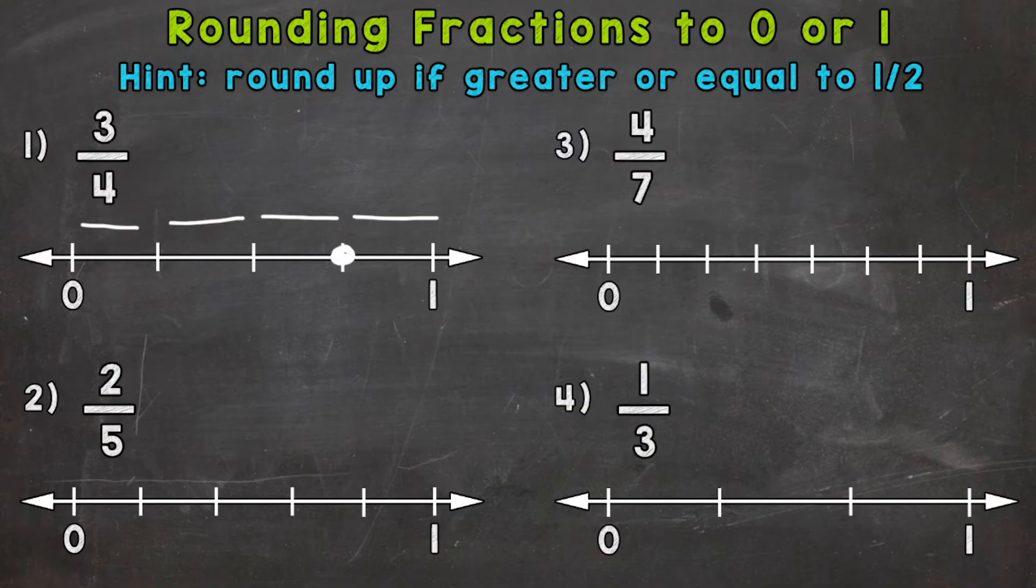Now when we're rounding to either 0 or 1, basically what we're doing is seeing is that fraction closer to 0 or is it closer to 1? And that's what you round to. Now the halfway point is right here, 2 fourths. So we can tell that 3 fourths is closer to 1 and therefore rounds to 1.